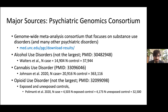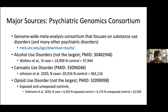The first major source of substance use disorder summary statistics is the Psychiatric Genomics Consortium. They've completed three GWAS to date: the Walters et al. GWAS of alcohol use disorders focused on alcohol dependence; a cannabis use disorder GWAS completed by Emma Johnson, Thorgir Thorgeirsson, and Ditte Demontis — probably the largest publicly available cannabis use disorder GWAS; and an opioid use disorder GWAS by Renato Polimanti, which is useful because it compared exposed versus unexposed controls.